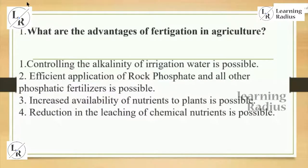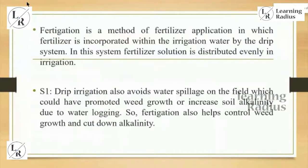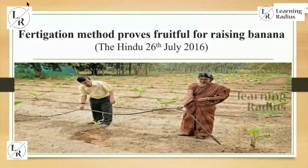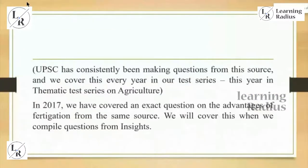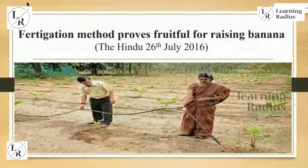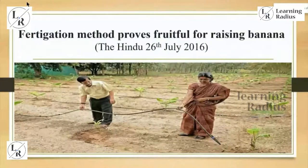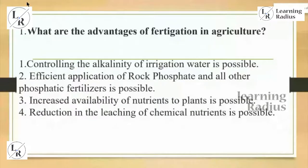The question asks: what are the advantages of fertigation in agriculture? There are four options. Fertigation in agriculture is not a new topic for 2019 or 2020 — the fertigation method proving fruitful for raising banana was an article from 2016 onwards. UPSC is asking a question from agriculture, from geography, from current affairs, but that current asset has roots going back to 2016. The answer is options 1, 3, and 4: controlling the alkalinity of irrigation water is possible, increasing availability of nutrients to plants is possible, and reduction in leaching of chemical nutrients is possible.